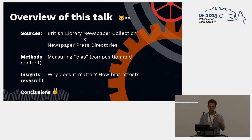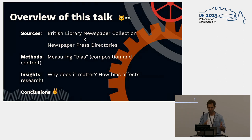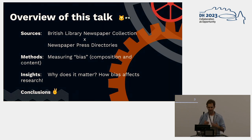In this talk, I will first start by introducing my sources, which is the British Library newspaper collection and some additional sources — the press directories. Then I will describe the methods we use for measuring bias and representativeness. And most importantly, we will try to tell why does this matter — how can this kind of analysis actually guide and help historical research based on newspapers?